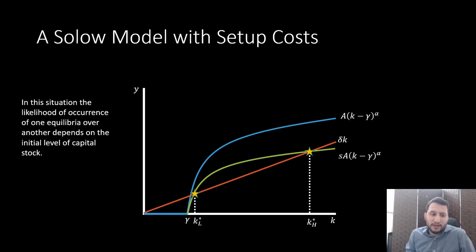In this situation the likelihood of occurrence of one equilibria over another depends on your initial capital stock that you have. So you could be either drawn to k_h* or k_l* depending on what your initial capital stock is going to be. That's something that you want to keep in mind.